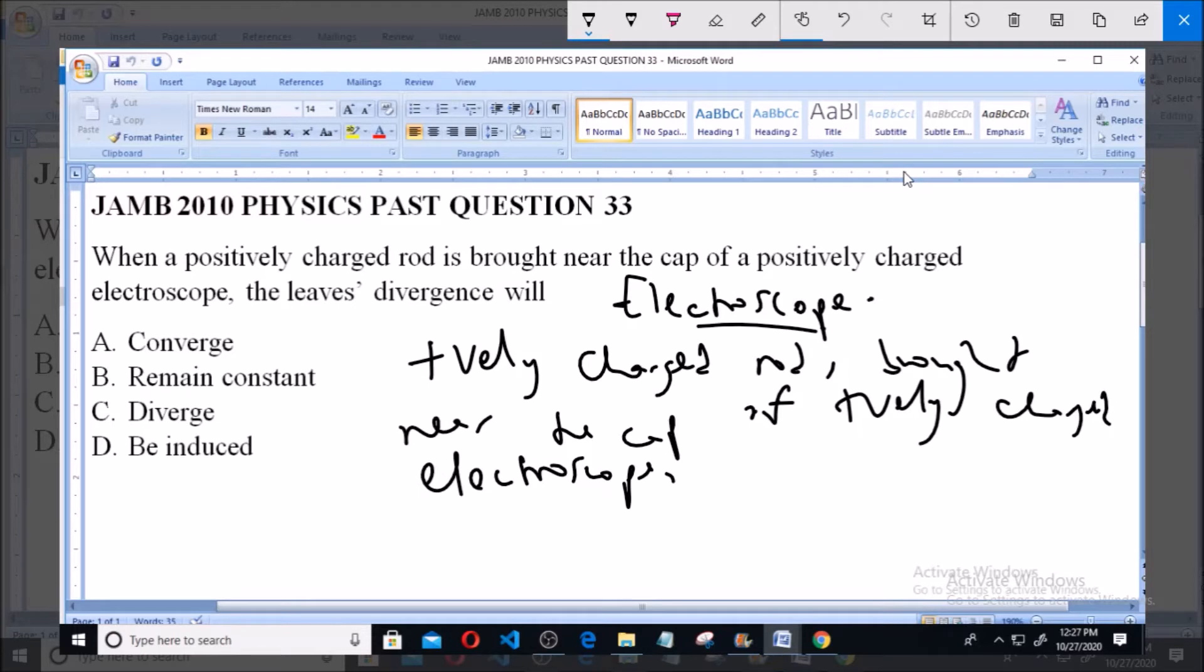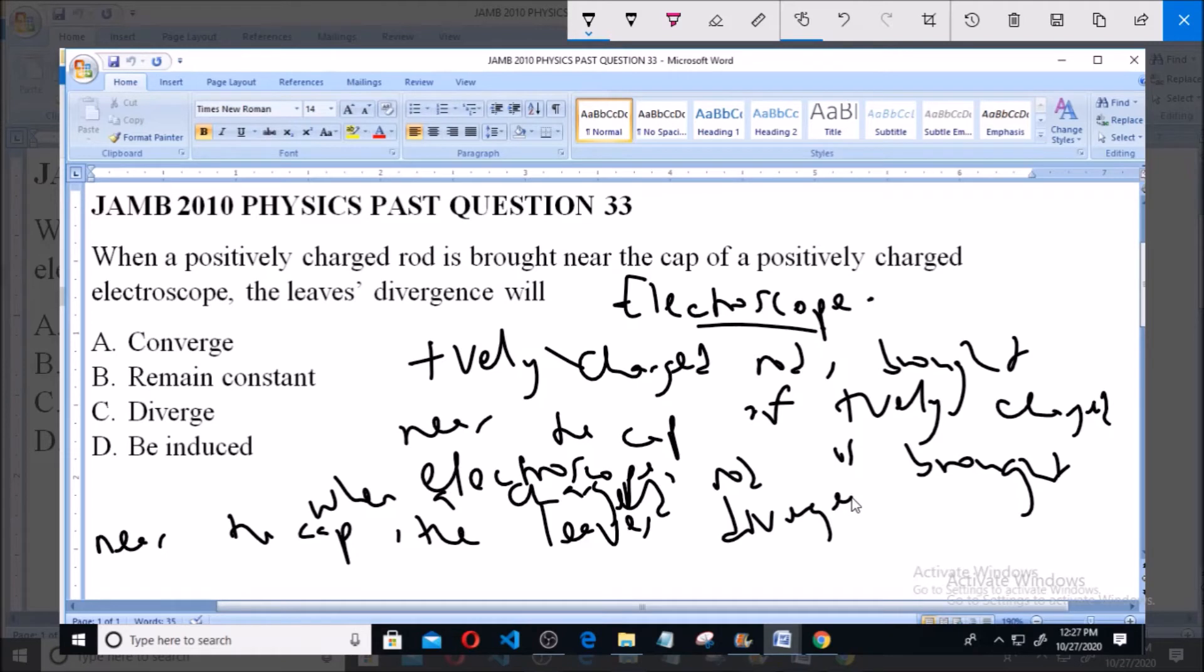when a charged rod is brought near the cap of the electroscope without touching it, the leaves normally diverge. The leaves will diverge, indicating that the instrument is charged.